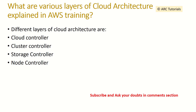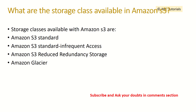Explain the different layers of cloud architecture in AWS. There are different layers: cloud controller, cluster controller, storage controller, and node controllers. What are the storage classes available in Amazon S3? We have Amazon S3 Standard, Standard Infrequent Access, Reduced Redundancy Storage, and Amazon Glacier.